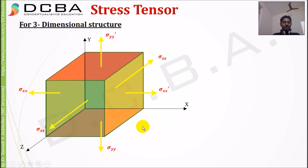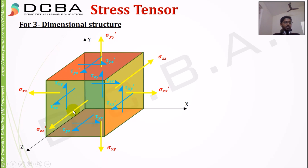For a three-dimensional structure, extending along the same lines, we first draw the direct stresses and then the shear stresses. The direct stresses are: sigma_xx and sigma_xx dash on the negative and positive X planes, sigma_yy and sigma_yy dash on the negative and positive Y planes, and sigma_zz and sigma_zz dash on the negative and positive Z planes. Then we have the shear stresses following the same nomenclature just explained.